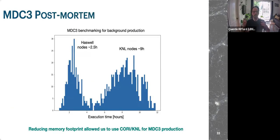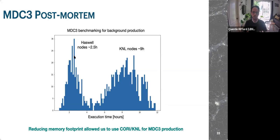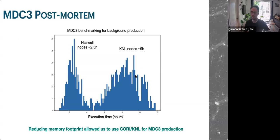In the MDC3 benchmarking production, execution time changed quite a bit from MDC2 — partly because the number of events per job also changed. The factor-of-four difference between Haswell and KNL is still present. But the key message is that by reducing the memory footprint, we were able to use Cori KNL efficiently during MDC3 production.